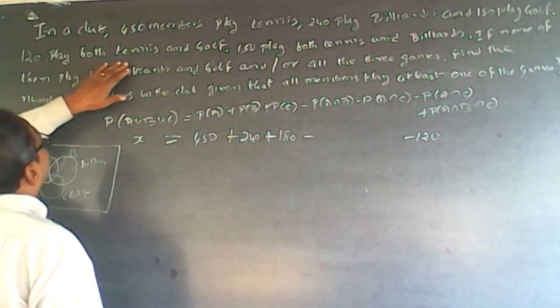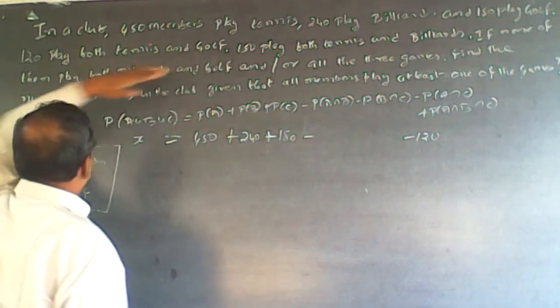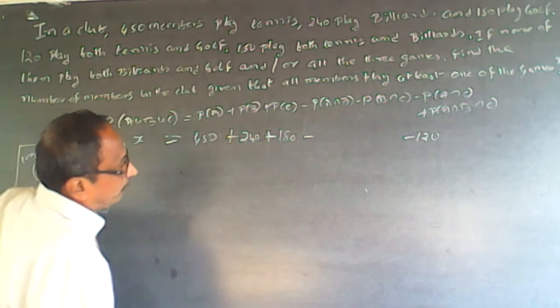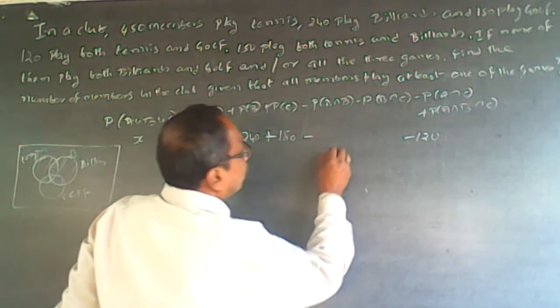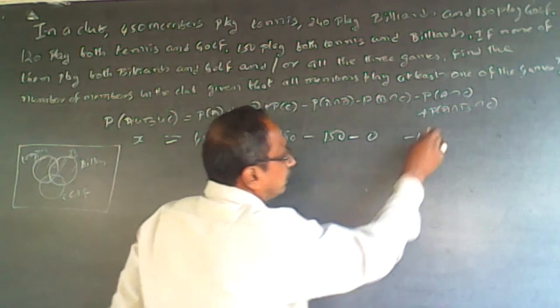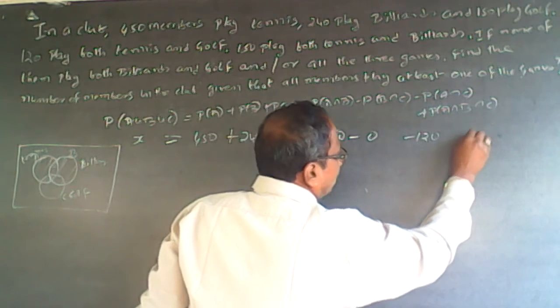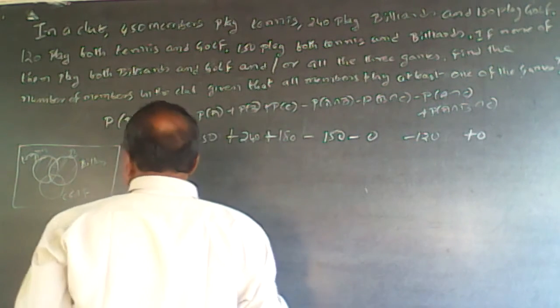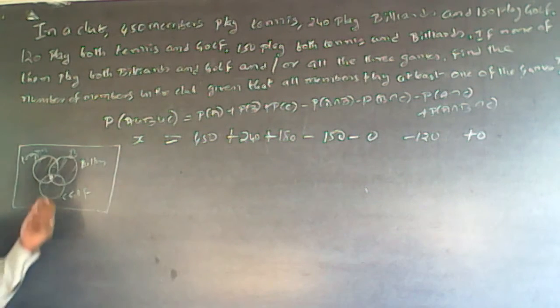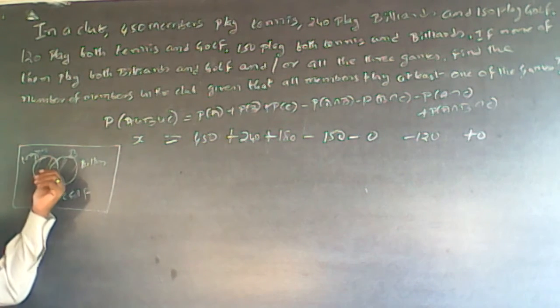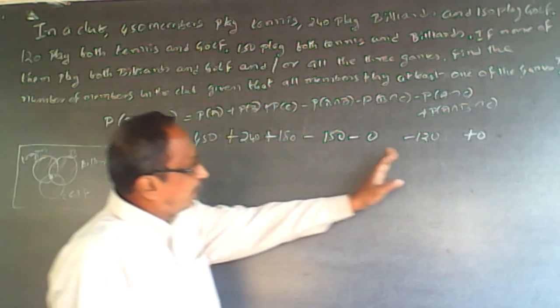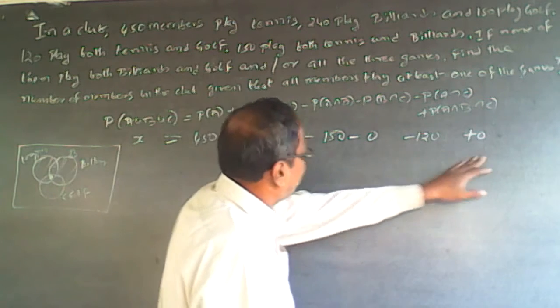And then tennis and billiards, A intersection B minus 150. Minus 0 for B intersection C. And this will be plus 0 because this portion, A intersection B intersection C, no one is there.